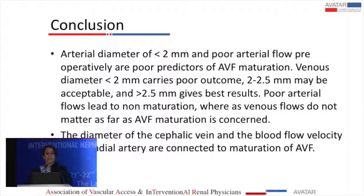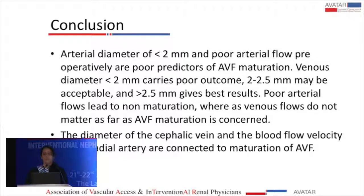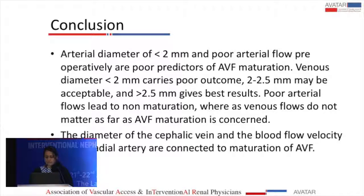To conclude, an arterial diameter of less than 2 mm and a poor arterial flow preoperatively are poor predictors of AV fistula maturation. In the venous diameter, less than 2 mm carries a poor outcome; between 2 to 2.5 mm it is acceptable; but more than 2.5 mm gives the best results. Poor arterial flows also lead to non-maturation, whereas venous flows do not matter as much for AV fistula maturation. The diameter of the cephalic vein and blood flow velocity in the radial artery are connected to AV fistula maturation.